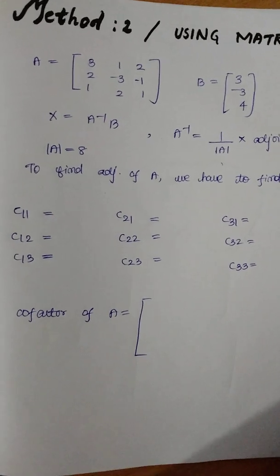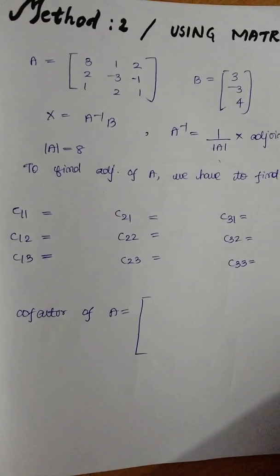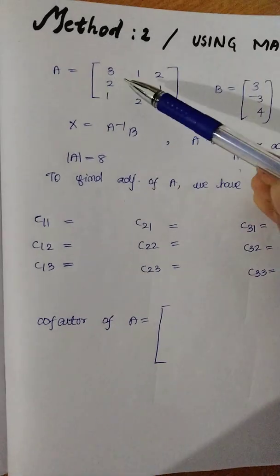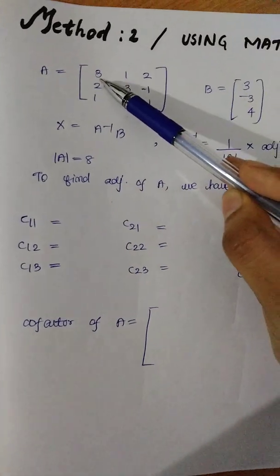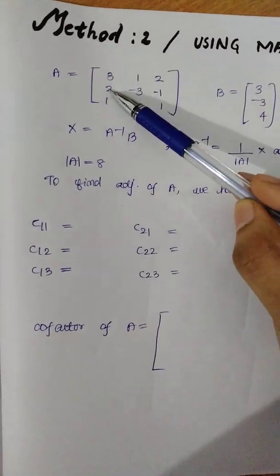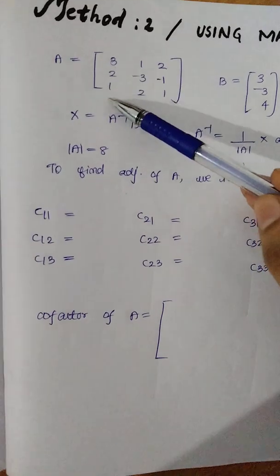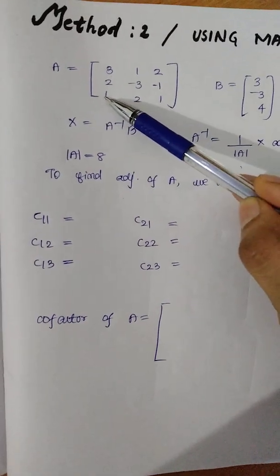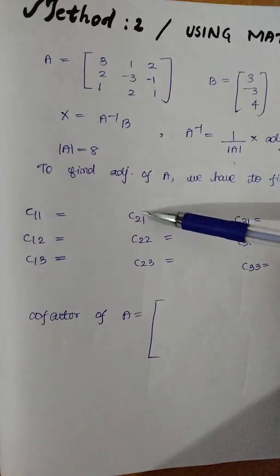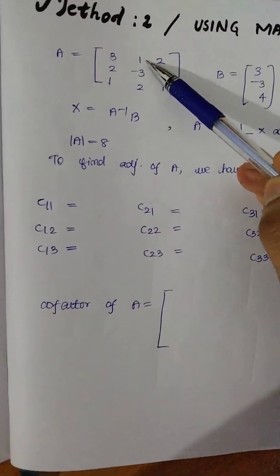So with that we can do it. C1,1 — that is the other element. C1,2 — that's the element. C2,1 — that's the element.